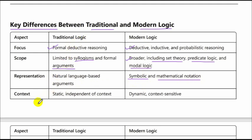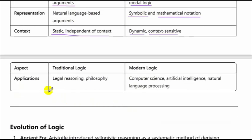Regarding context, traditional logic is static and independent of context, whereas modern logic is dynamic and context-sensitive. In terms of applications, traditional logic includes legal reasoning and philosophy, whereas modern logic applications include computer science, AI, and natural language processing.